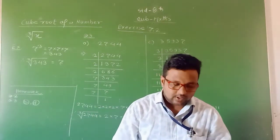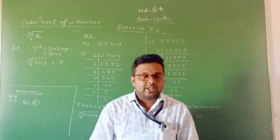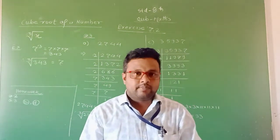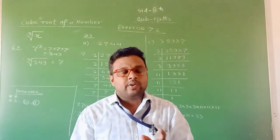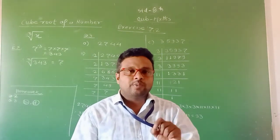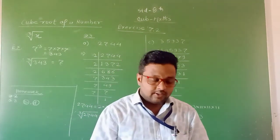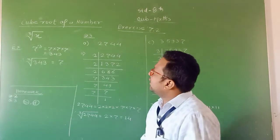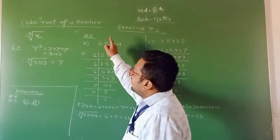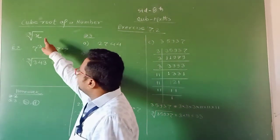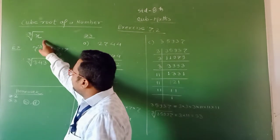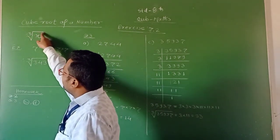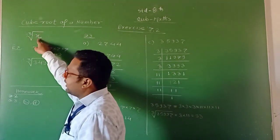Good morning students. In the previous video, we completed exercise 7.1, where we covered the cube of given numbers and their properties. In today's video, I am going to explain the cube root of a number. The cube root is represented by a symbol where we write 3, then the root sign, and here is the number.